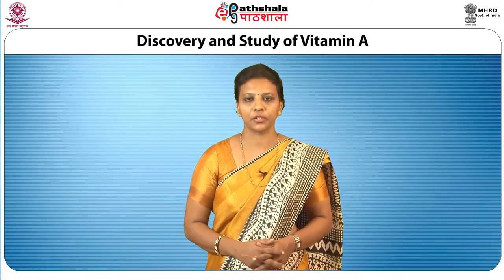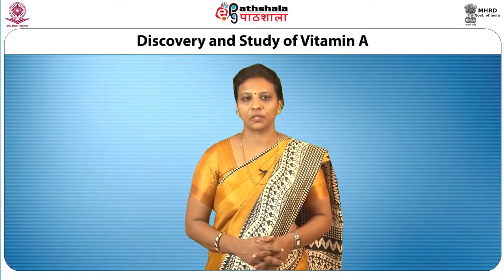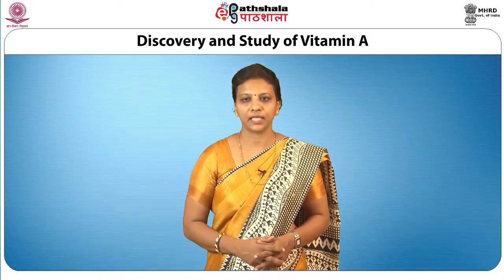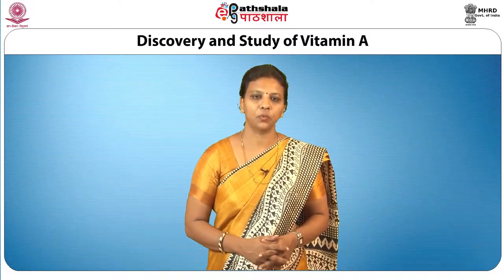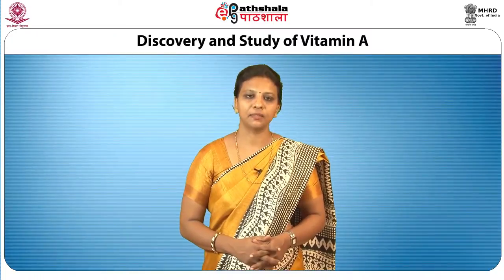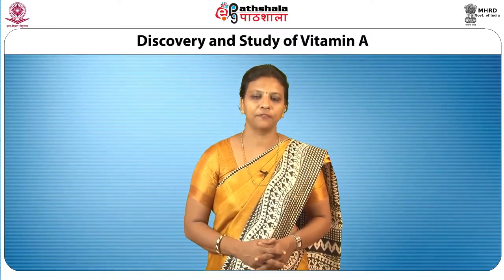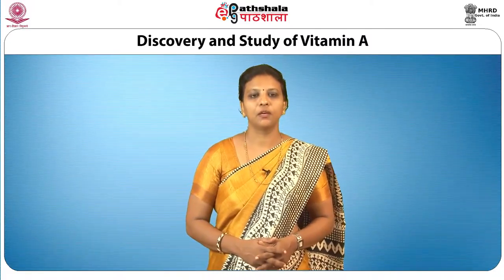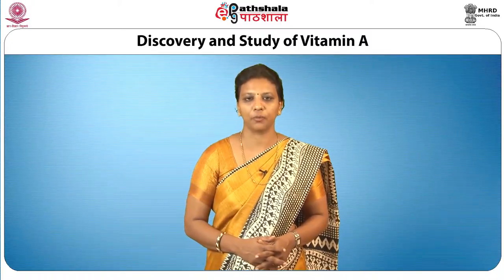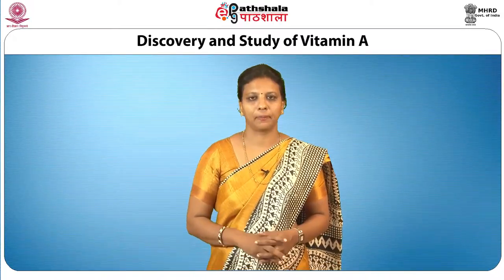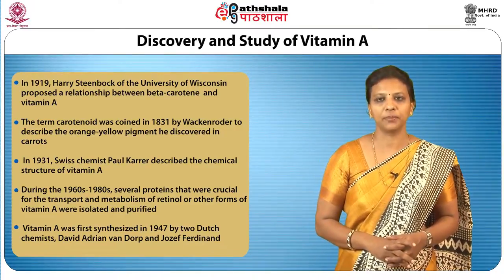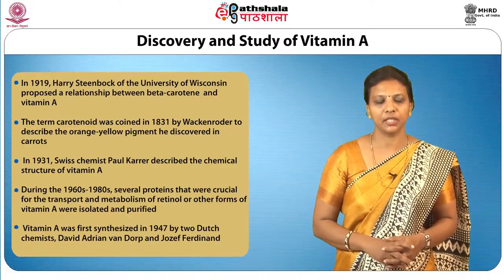Research by scientists Osborne and Mendel, shortly after McCollum's study, discovered that cod liver oil produced the same results as butter in rat studies, confirming the earlier work of Japanese physician M. Mori. Subsequent studies indicated that vitamin A was colourless, though commonly found in foods with beta-carotene, which was yellow in colour. Moore in England showed that beta-carotene was converted biologically to a colourless form of vitamin A, which was then stored in the liver. In 1919, Harry Steenbock of the University of Wisconsin proposed a relationship between yellow plant pigments, beta-carotene and vitamin A.